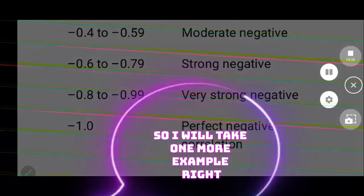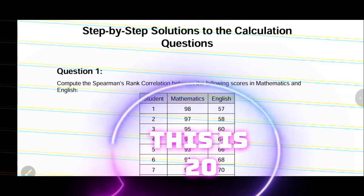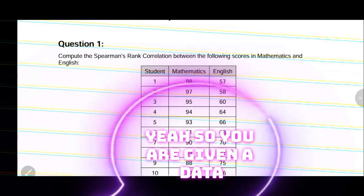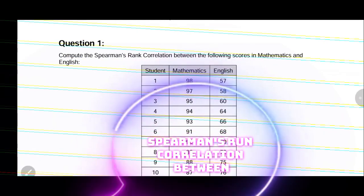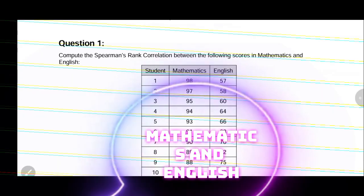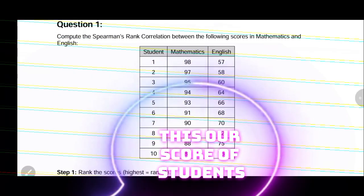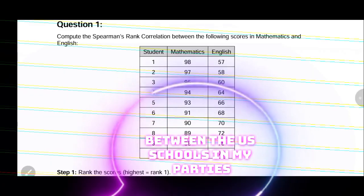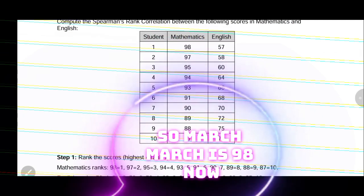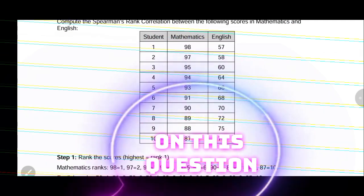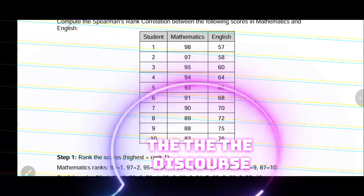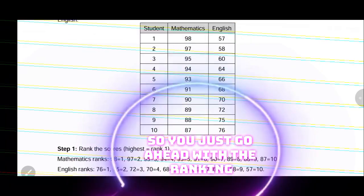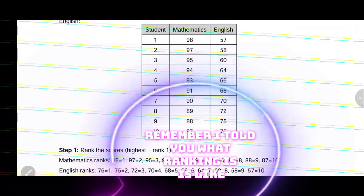Let's look at the second example, which is from a 2024 past question. You are given data and have to compute the Spearman's rank correlation between Mathematics and English. These are scores of students in both subjects, and you want to compare if there's a relationship between their Mathematics scores and their English scores. The Mathematics scores are given from highest to lowest.